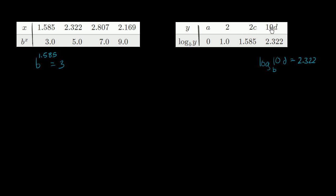So I'm assuming you've given a go at it, so let's see what we can deduce from this. Here we have just a bunch of numbers. We need to figure out what b is. This first column right over here tells us that log base b of a — so now y is equal to a — is equal to zero.